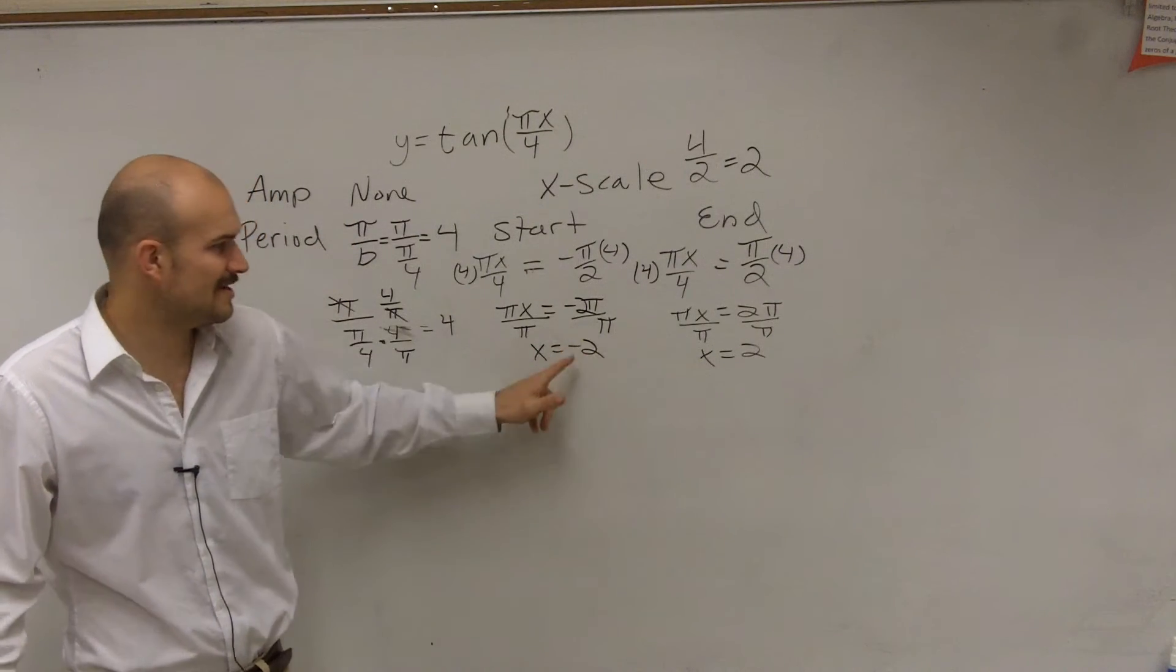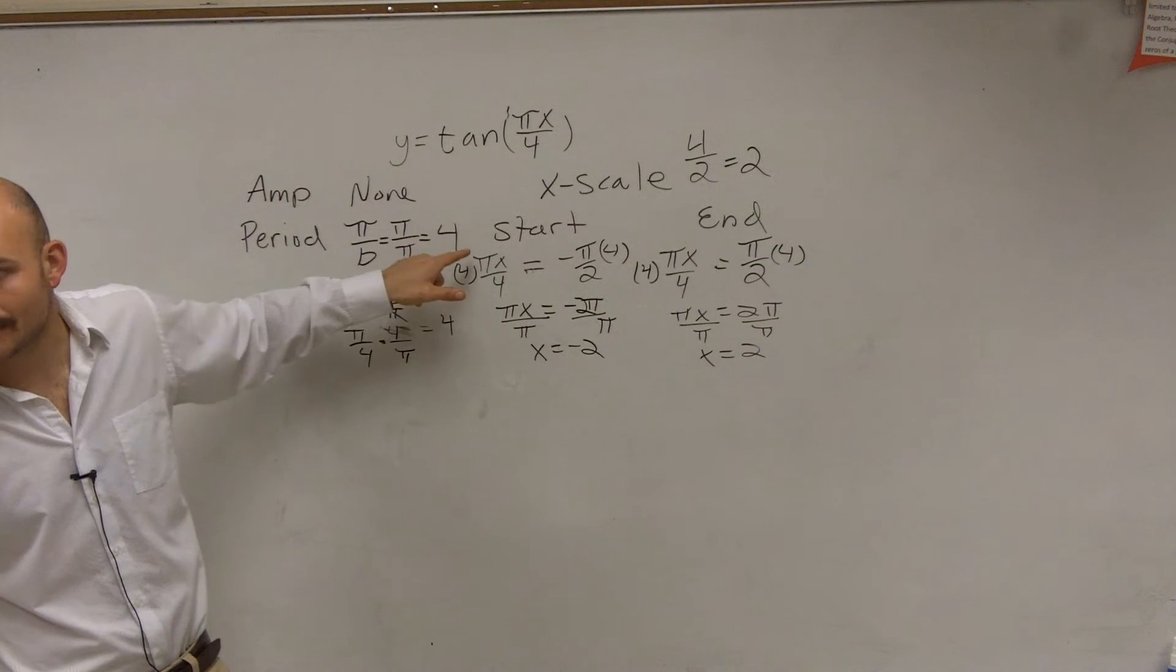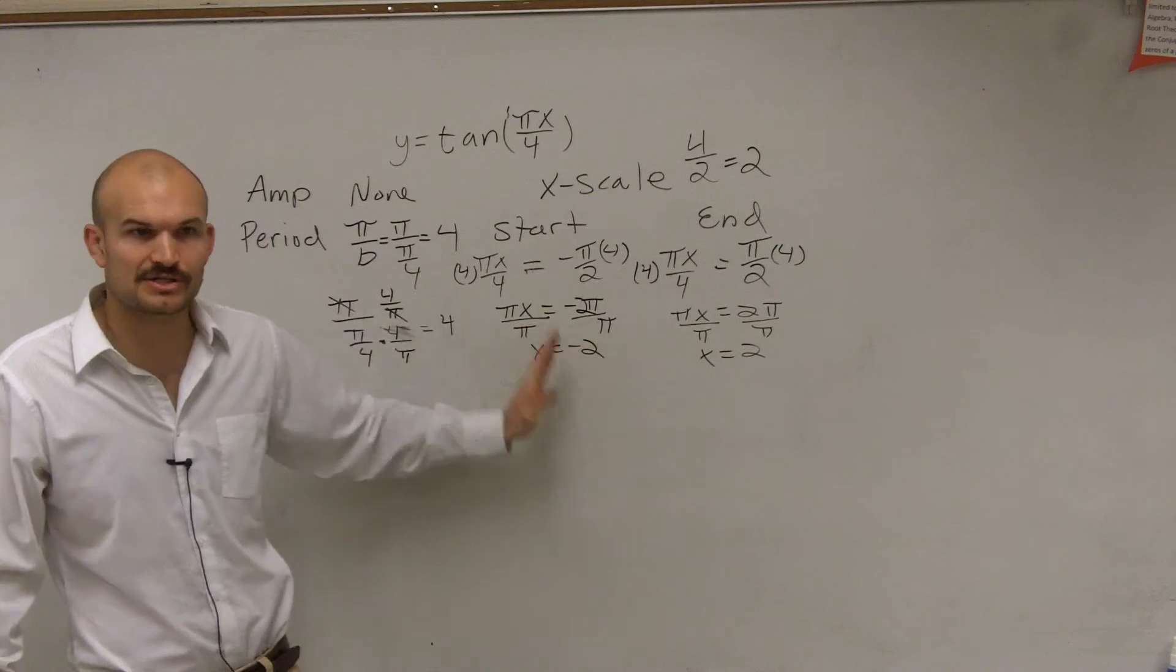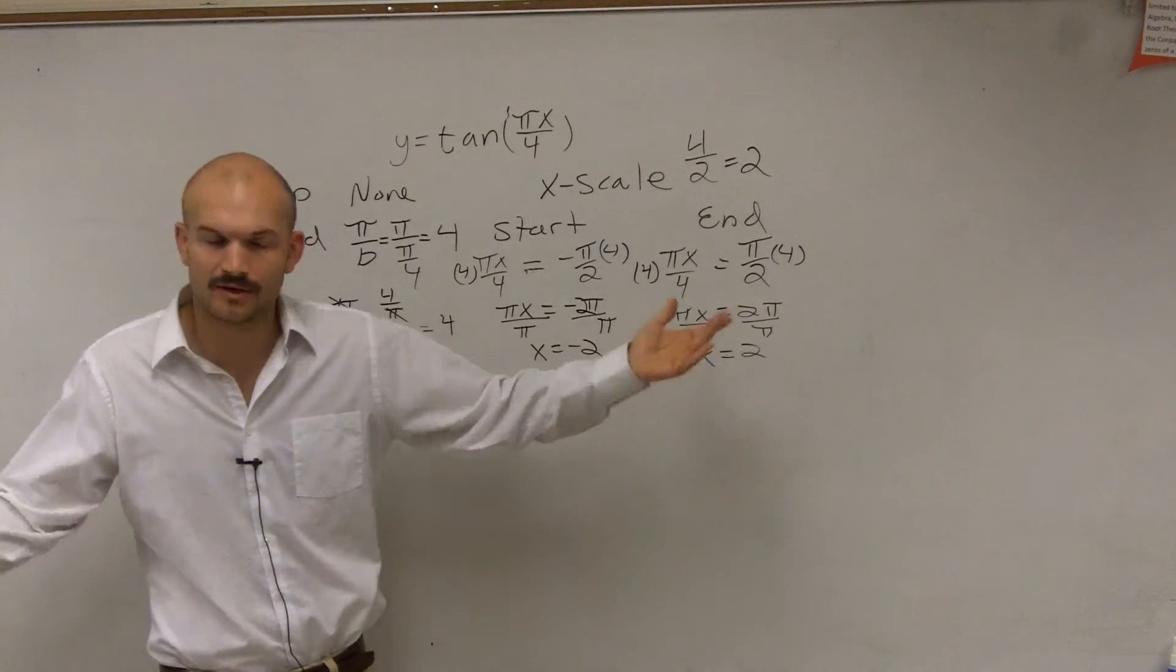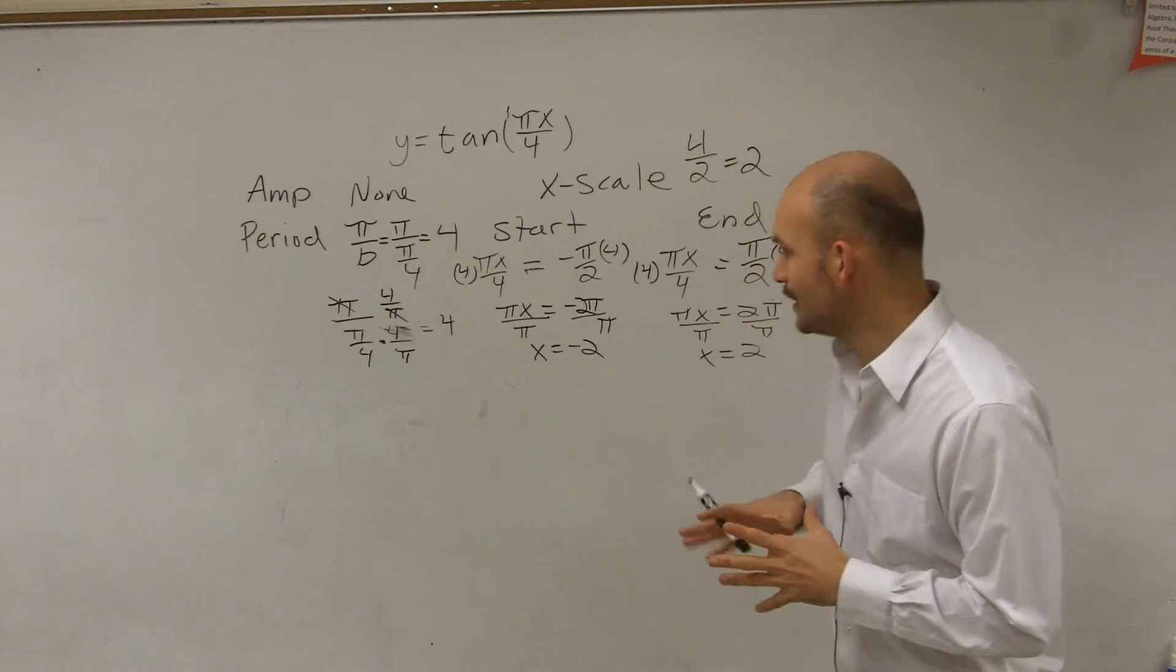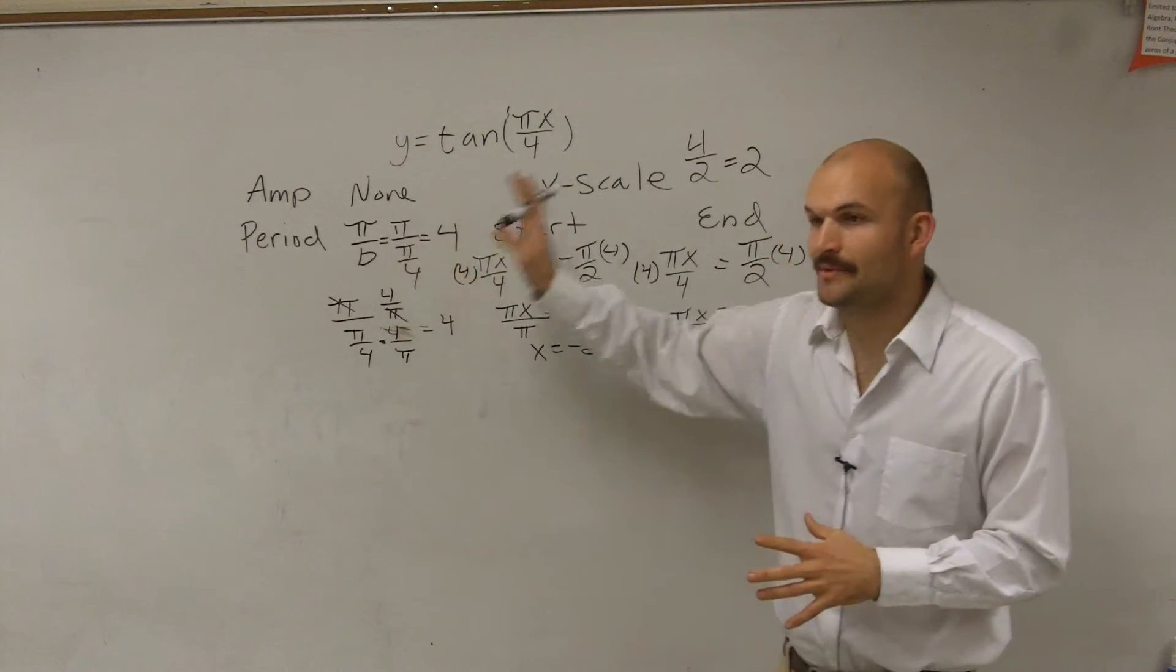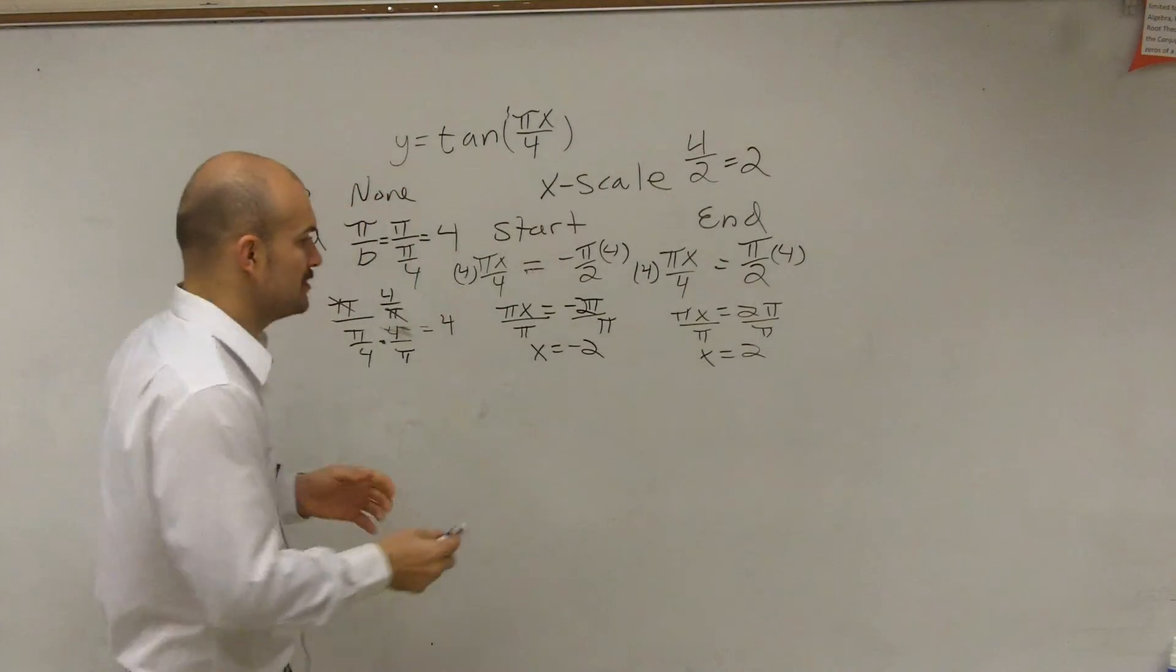Well, it's an easy check because you could say from negative 1 to 2 is not a distance of 4, and that's your period, right? So our period is 4. So therefore, the distance between your start and your end has to be 4, which you can say from negative 2 to 2 would be 4. Okay. So that's what we look like. We have our start, we have the end, we have our period, and we have our x scale. So let's go and take a look at what our tangent graph is going to look like.